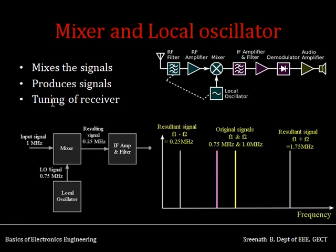The mixer and local oscillator section is the most important part of the super heterodyne receiver — this receiver gets its name from the process happening here. The local oscillator is a device used to produce a signal of a particular frequency. In heterodyne, you mix two signals: the carrier being received at the carrier frequency and the local oscillator signal at another frequency. For example, the input carrier signal is at 1 MHz and the local oscillator generates a signal at 0.75 MHz.